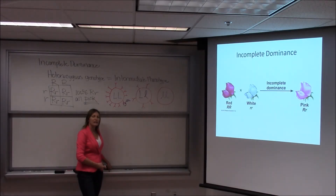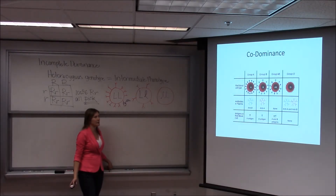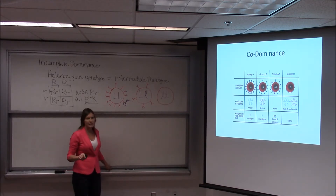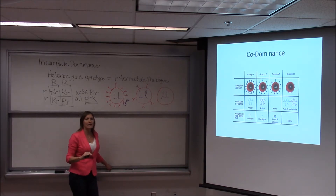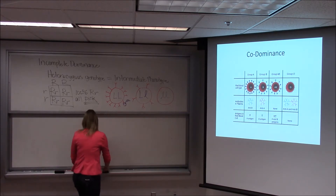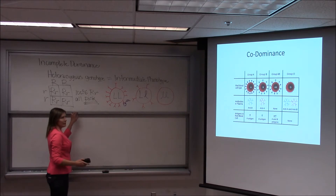Another pattern of inheritance that isn't quite as common is something called co-dominance. The best example of that is human blood type. I'm not talking about Rh positive and negative — that is inherited separately, and that's a situation where Rh positive is completely dominant over Rh negative. This is just ABO blood type, and it is a good example of co-dominance.